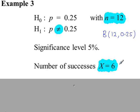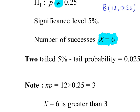We start off by working out the mean of the binomial distribution, n times p. The mean of the binomial distribution is 3. Our x value here is 6, which is greater than 3. So in the tables, we're going to work out P(x ≥ 6).